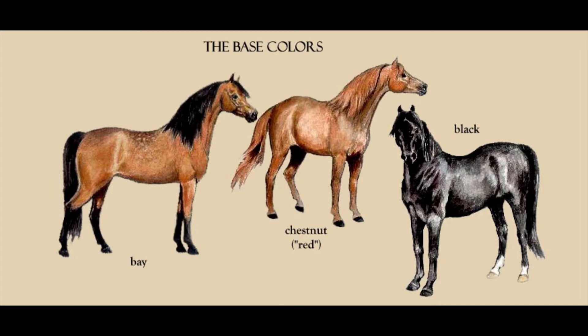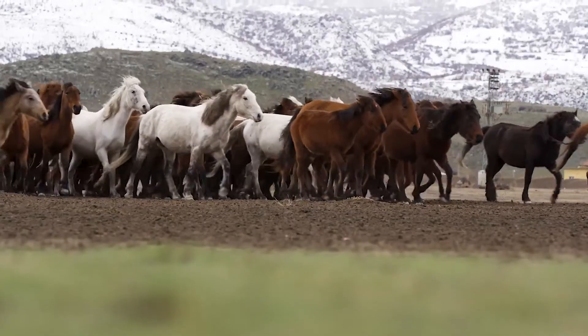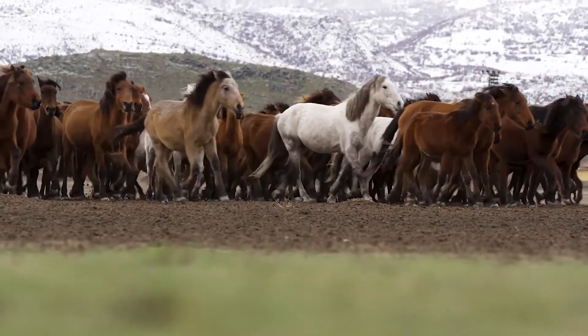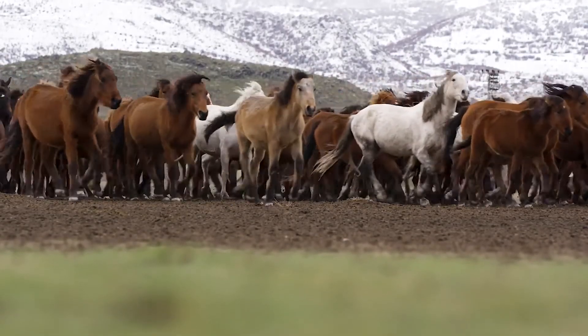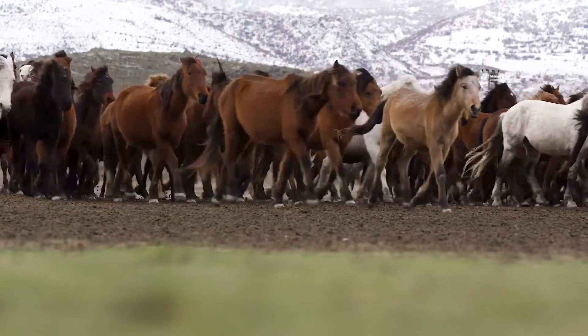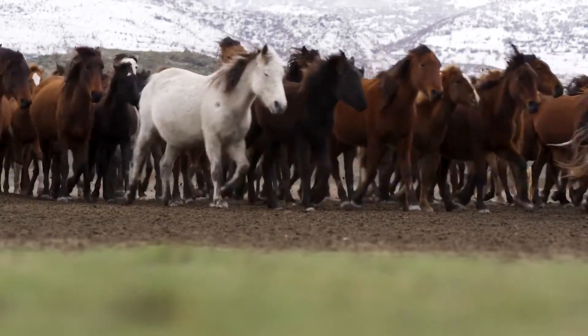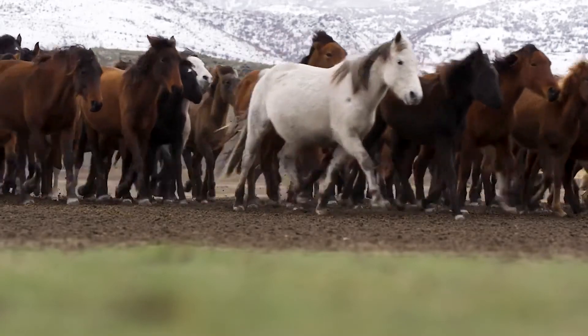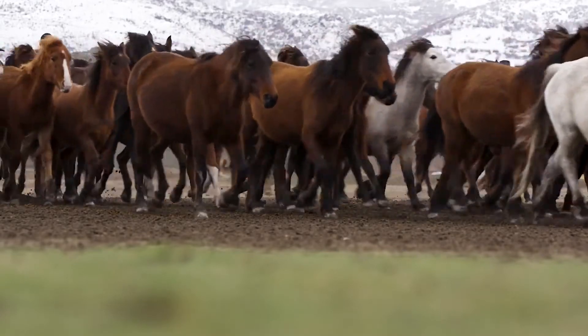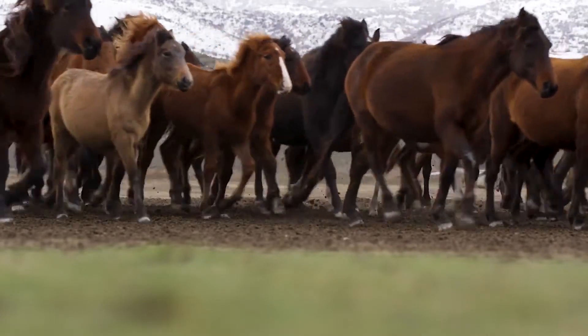In actuality, there are only three base colors: black, red, and bay. Red can also be called chestnut. A lot of people think that white is a base color, and a lot of people also think that seal bay is a base color. But all the variations of bay and all the variations of chestnut are grouped into chestnut or bay — only those three.